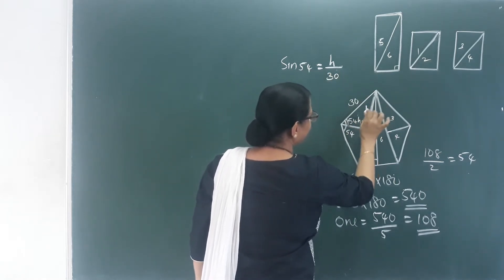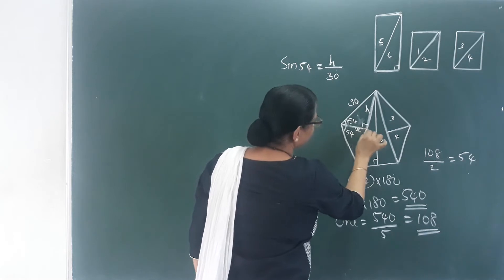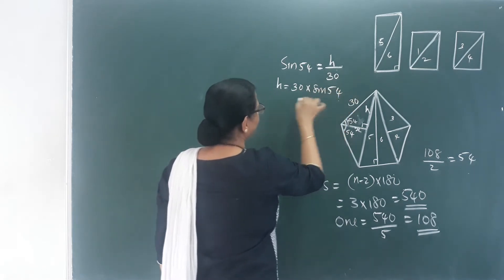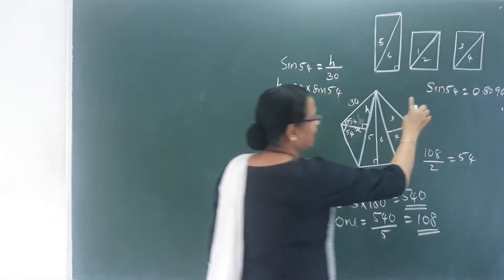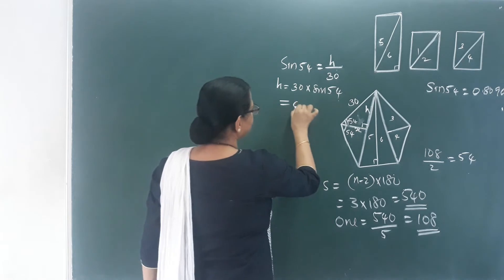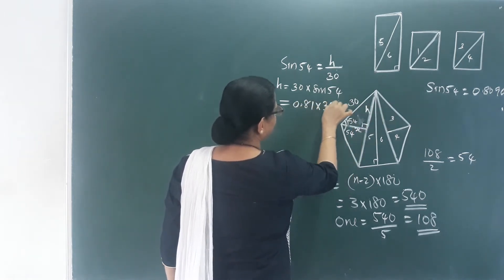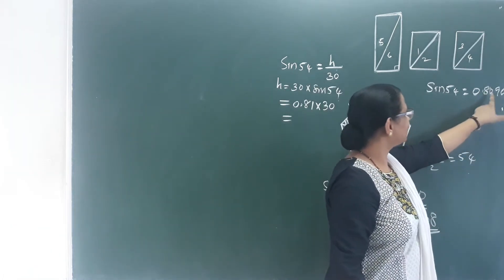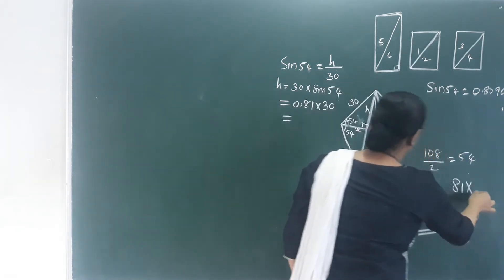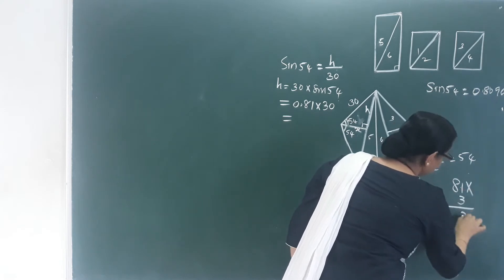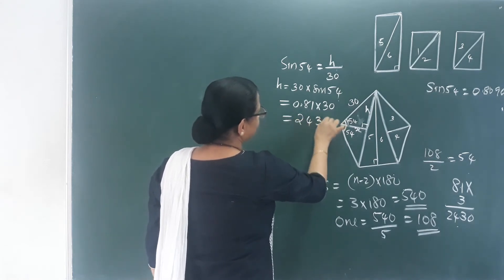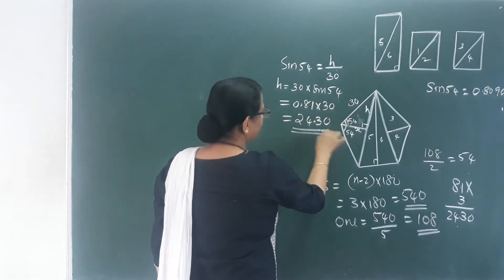The hypotenuse is 30, so h equals 30 into sin 54. The value of sin 54 is 0.8090, approximately 0.81. So h equals 0.81 into 30. Calculating: 81 into 30 gives 2430, so with two decimal places h equals 24.30.